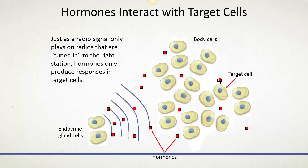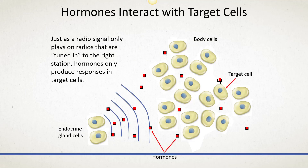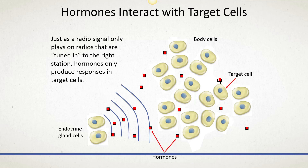Just as a radio signal only plays on radios tuned to the right station, hormones only produce responses in target cells. What makes a cell a target cell is having specific receptors on its surface. Only certain cells have receptors for a given hormone, and that hormone can only bind to those specific receptors. So even though a hormone is released throughout the body, it can only bind to specific receptors on its target cell and produce a change there.